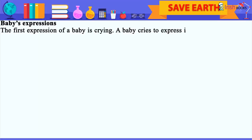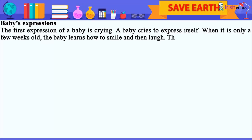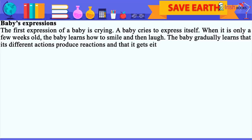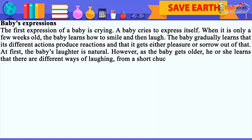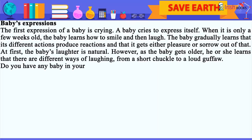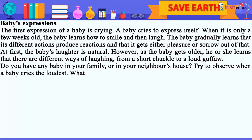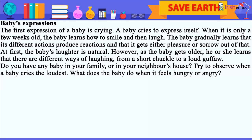The first expression of a baby is crying. A baby tries to express itself. When it is only a few weeks old, the baby learns how to smile and then laugh. The baby gradually learns that its different actions produce reactions and that it gets either pleasure or sorrow out of that. At first, the baby's laughter is natural. However, as the baby gets older, he or she learns that there are different ways of laughing, from a short chuckle to a loud guffaw. Try to observe when a baby cries the loudest, and what the baby does when it feels hungry or angry.